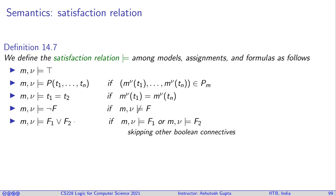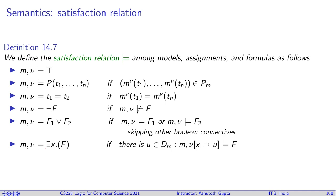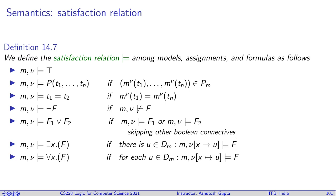The new thing is the quantifiers. For ∃x F: model m and assignment ν satisfy ∃x F if there exists some value u in the domain of m such that assigning x to u in ν satisfies F. For ∀x F, it is the symmetric idea: every value chosen from the domain must satisfy F.